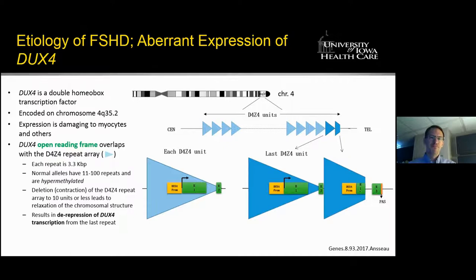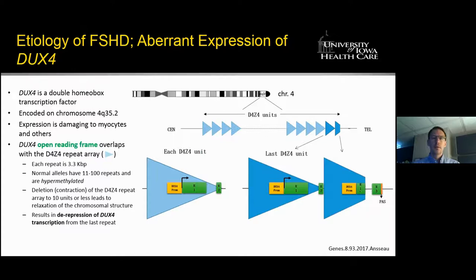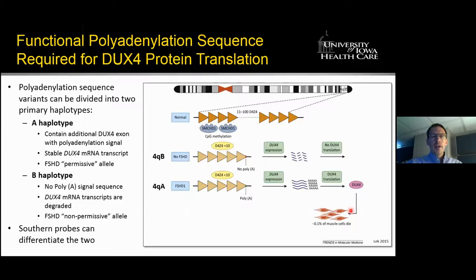It's taken us a long time to get to this point of understanding. Part of this is because the DUX4 open reading frame overlaps with a repeat array referred to as D4Z4. This repeat is about 3,300 base pairs in length, and normal alleles have anywhere from 11 to 100 repeats that are usually hypermethylated, which suppresses the expression of DUX4. But deletion or contraction of the repeat array to 10 units or less leads to relaxation of the chromosomal structure, derepression of DUX4, and transcription of the open reading frame from the last repeat element. Additionally, you have to have a functional polyadenylation sequence in the last open reading frame of the gene.